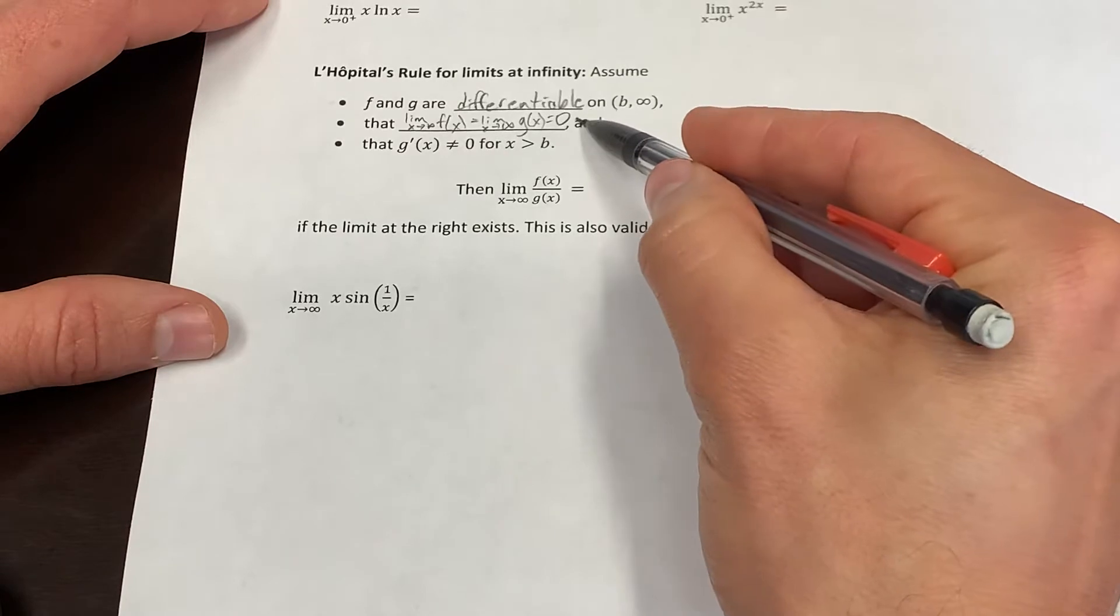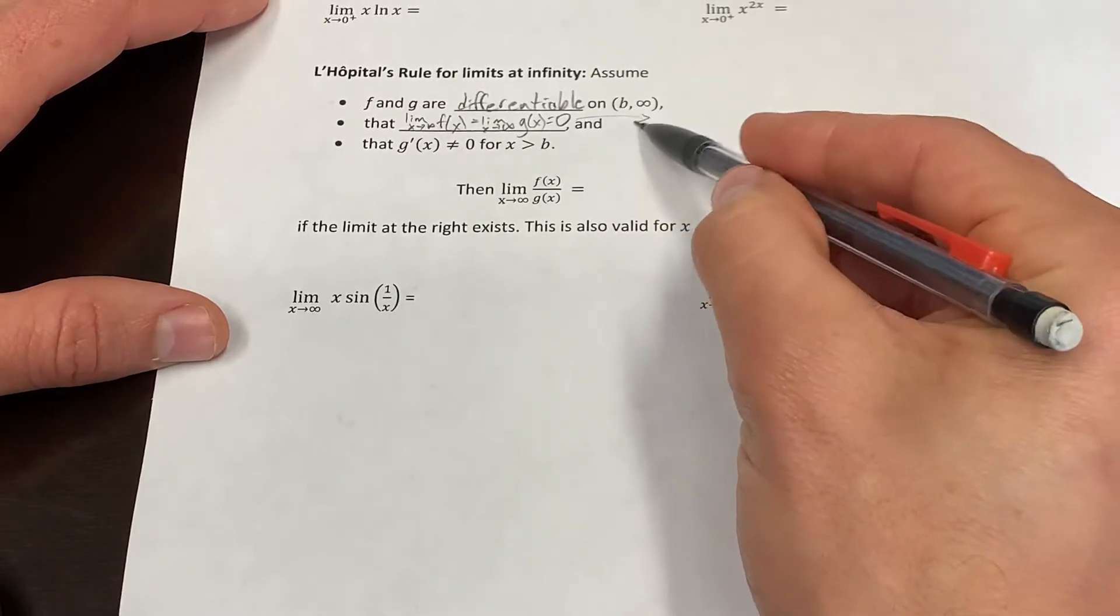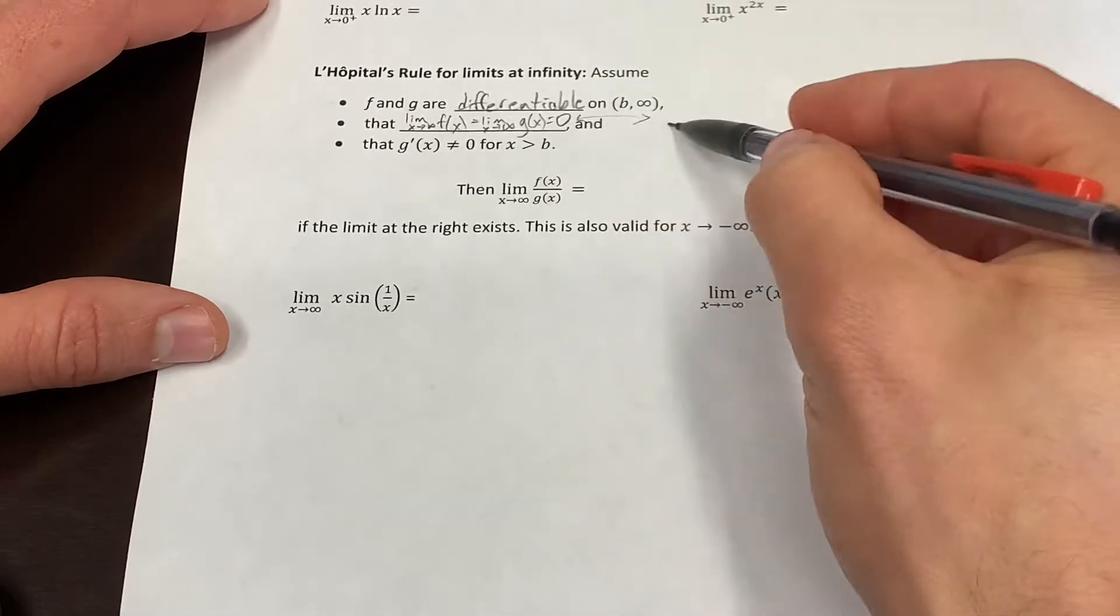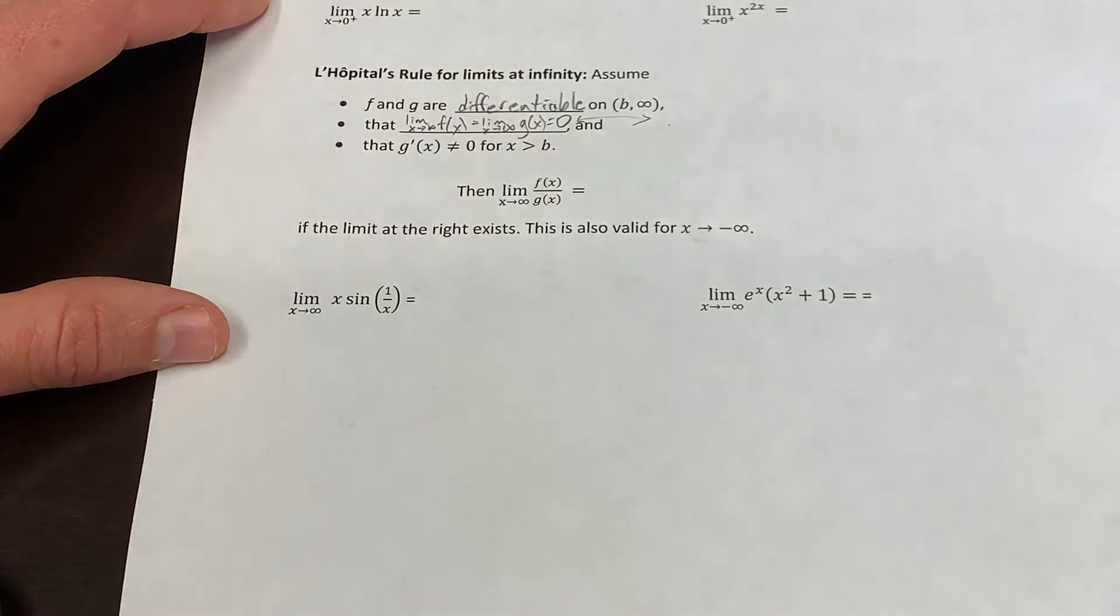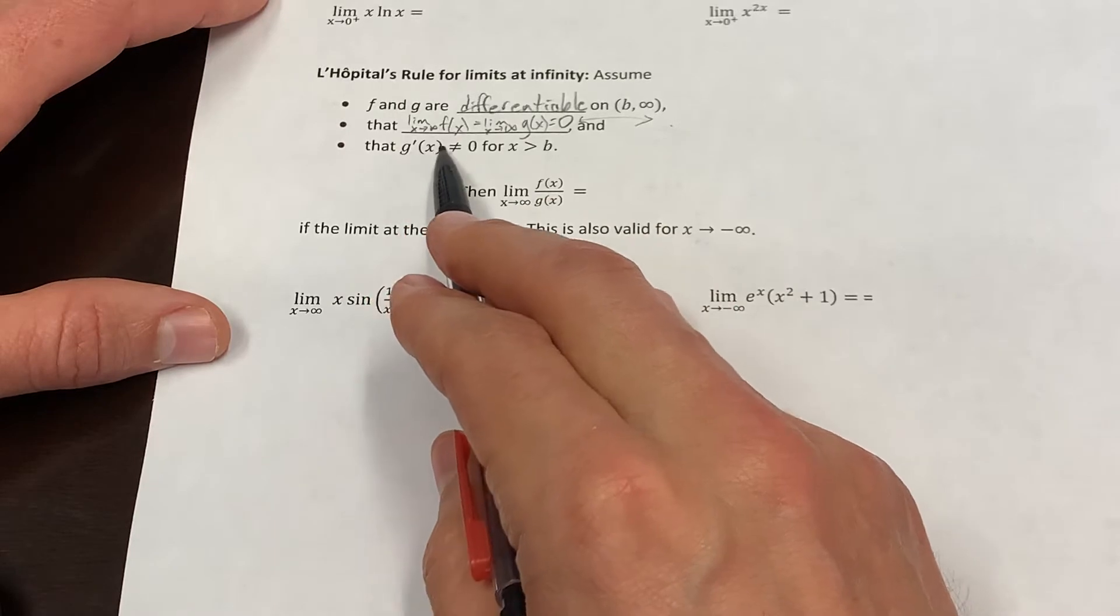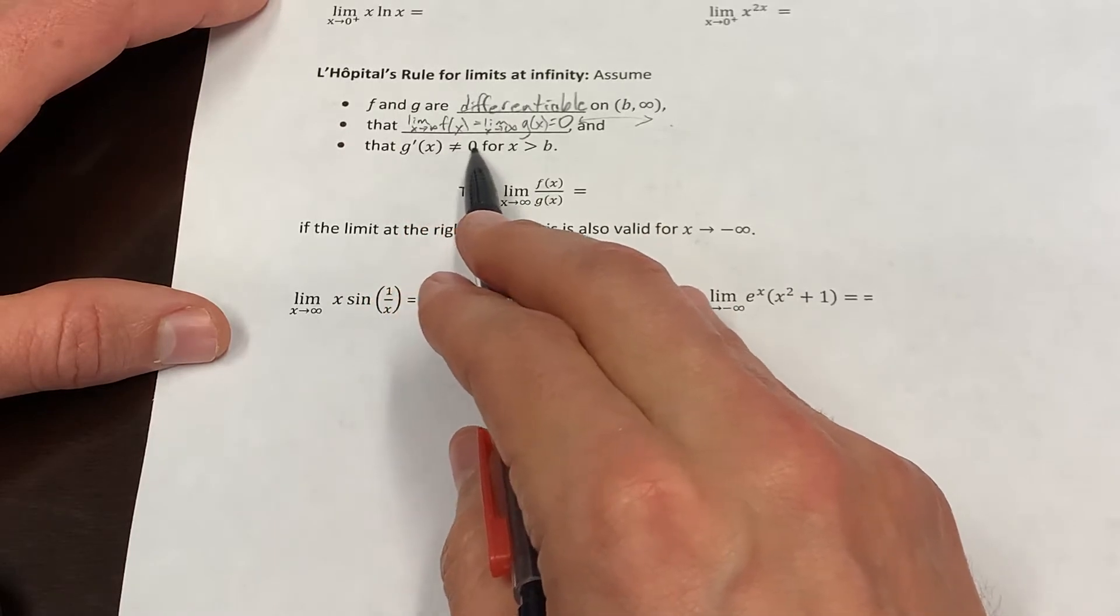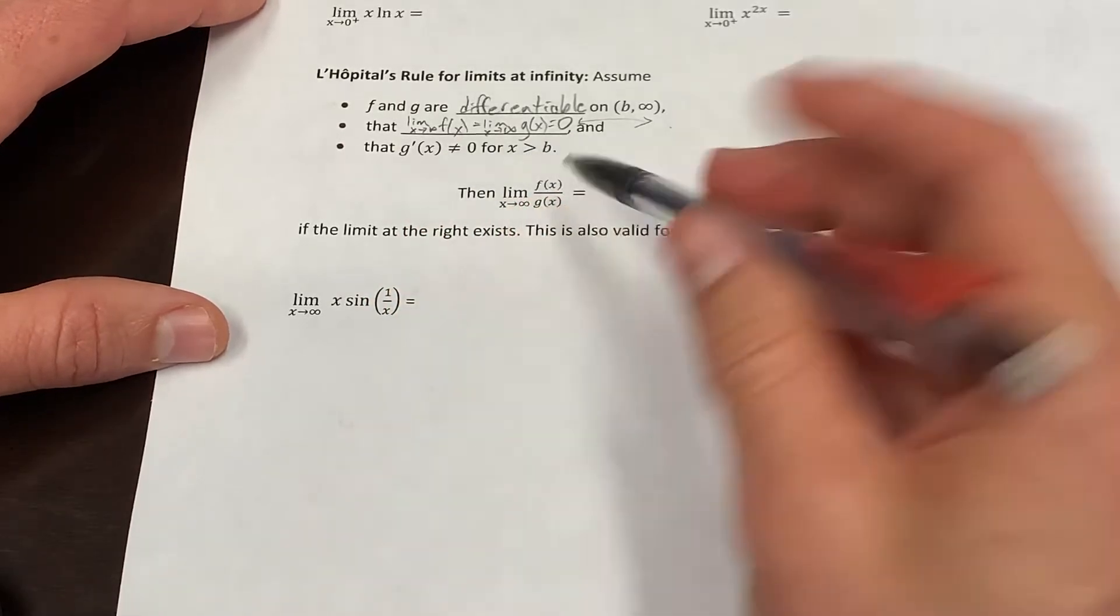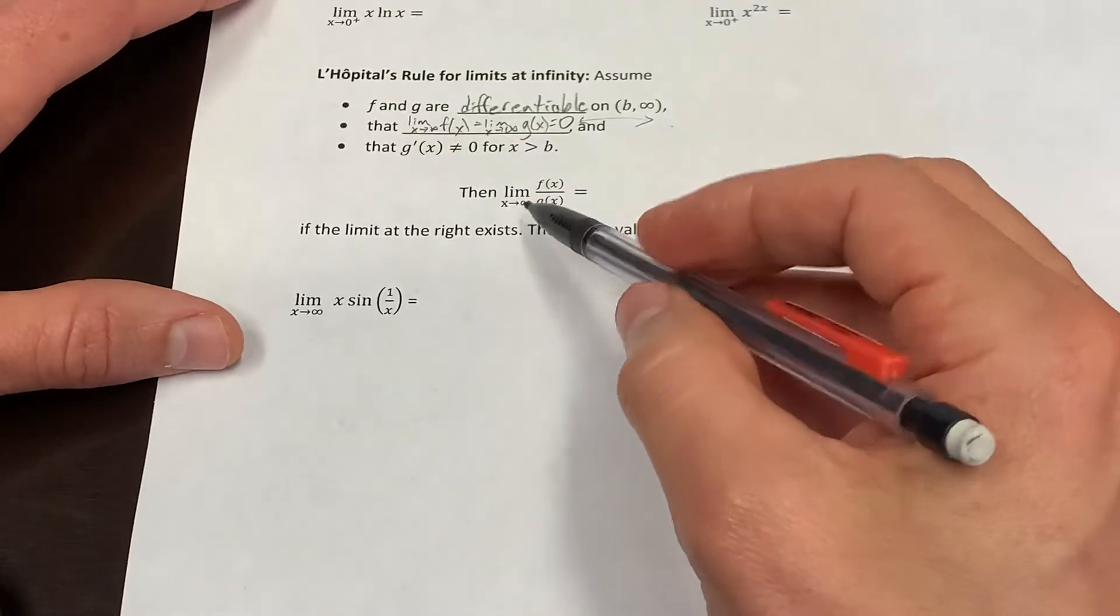By the way, this also works if that limit is infinity, but we'll talk about that perhaps at a different time. Finally, we can't have the derivative of the bottom be equal to zero for all large values, right? That's just like regular L'Hôpital's.